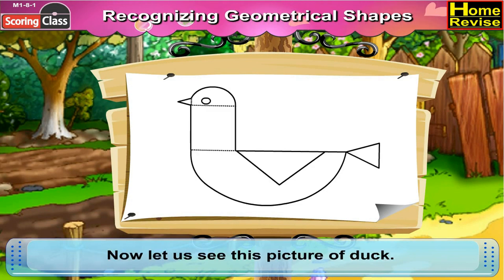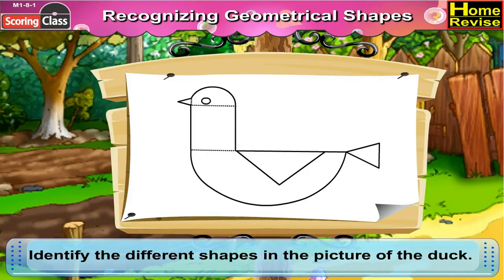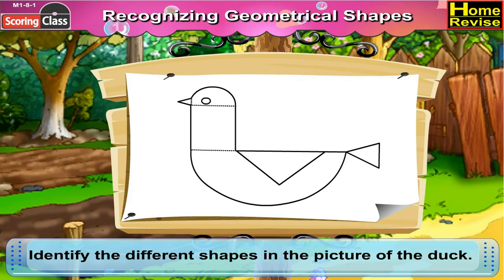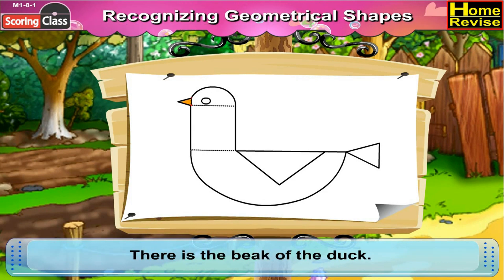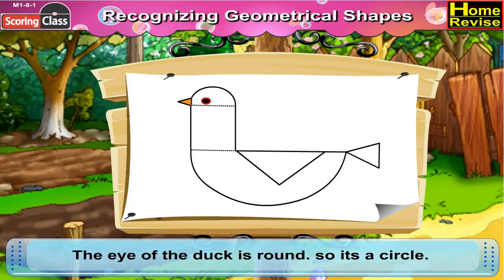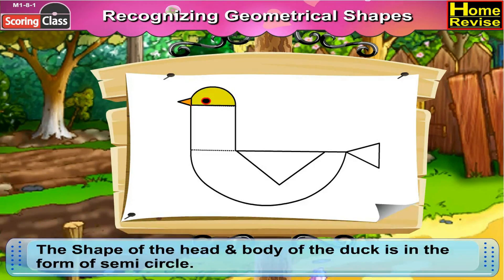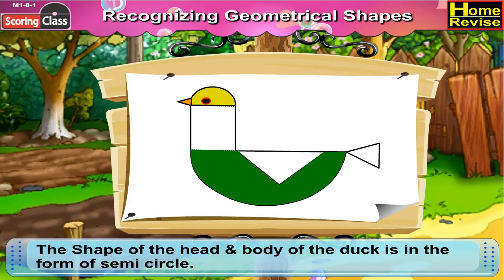Now let us see this picture of a duck. Identify the different shapes in the picture of the duck. Here is the beak of the duck — it is a triangle. The eye of the duck is round, so it's a circle. The shape of the head and body of the duck is in the form of a semi-circle.